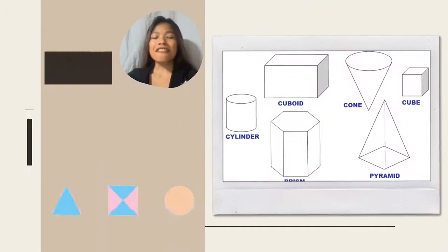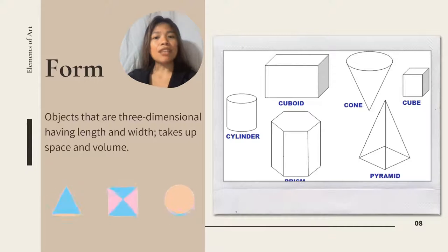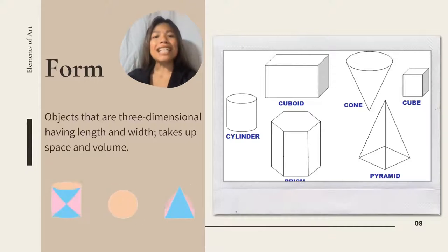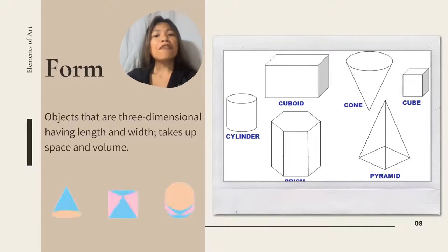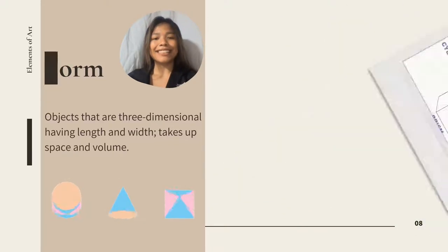Fifth is Form. Objects that have three dimensions, having length, width, and height. They can be viewed from many sides. Forms take up space and volume.